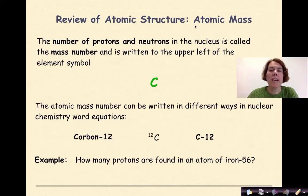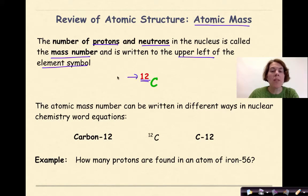Now let's review atomic mass. The number of protons and neutrons in the nucleus is called the mass number, and it is written in the upper left of the element symbol. So here again I have carbon. The atomic mass typically is located in the upper left-hand corner. So this 12 here represents the number of protons and neutrons in this atom of carbon.